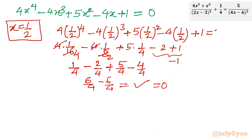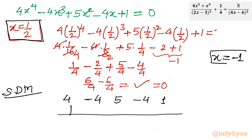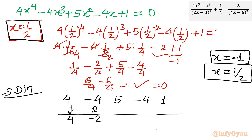I will use the synthetic division method again. Writing the quartic coefficients: 4, minus 4, 5, minus 4, 1. Using base solution x equals one half: bringing down 4; half times 4 is 2, giving minus 2; half times minus 2 is minus 1, giving 4; half times 4 is 2, giving minus 2; half times minus 2 is minus 1, giving 0. These are the coefficients for the cubic equation.